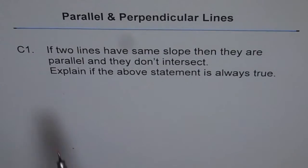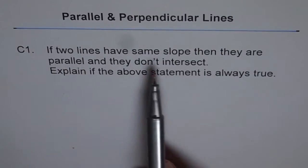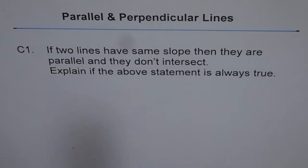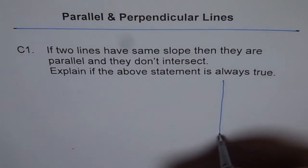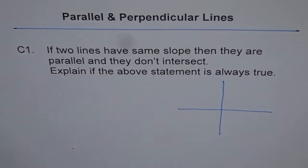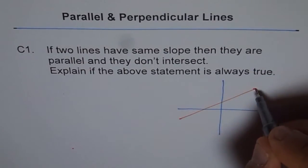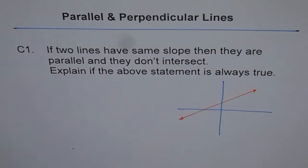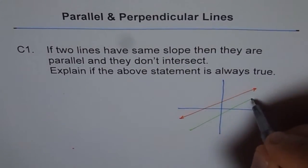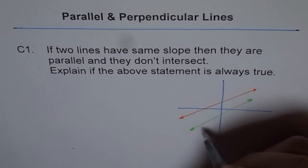Now here is the first one, C1. If two lines have same slope then they are parallel and they do not intersect. Well, that is what the parallel lines are, right? So on a coordinate plane, let us say this is a coordinate plane. If we need to draw parallel lines, then what do we do? We draw a line, let us say like this, that is a line, and we draw another line. And let us say this is another line, well this seems to be intersecting.